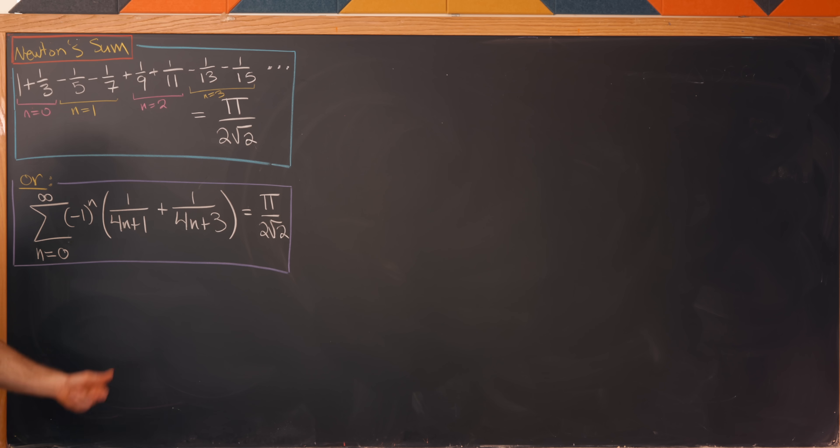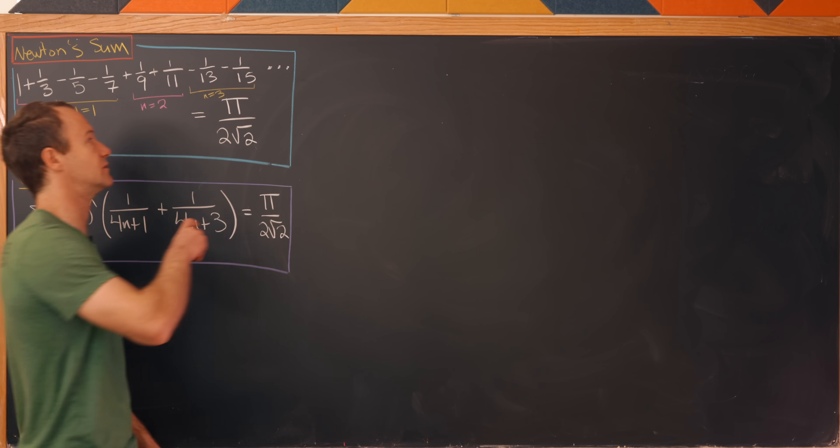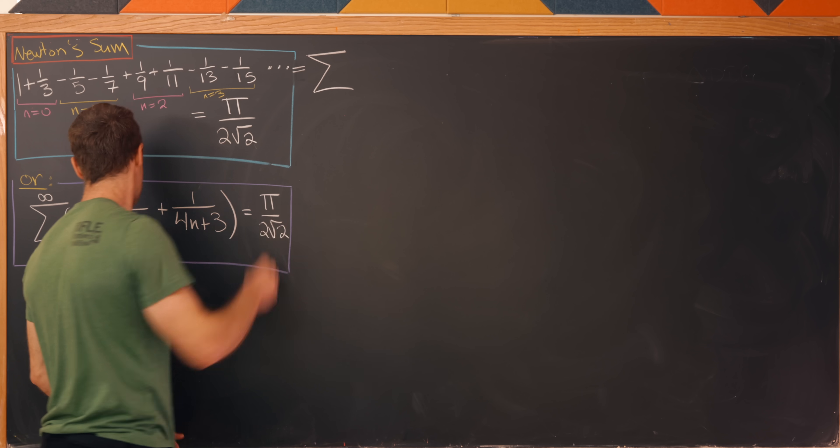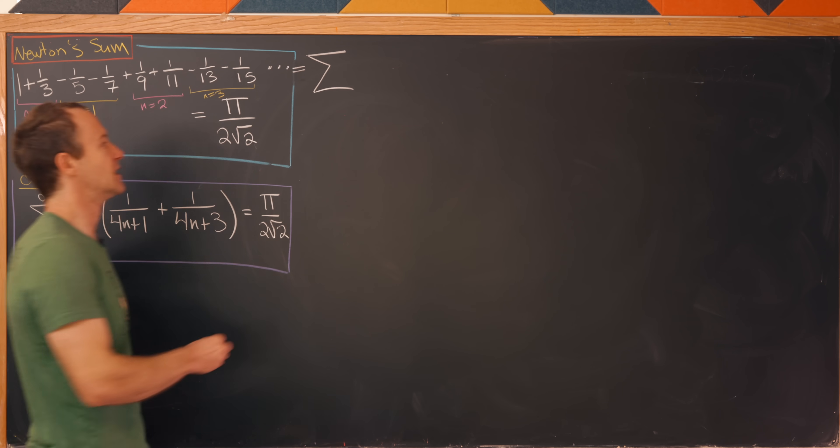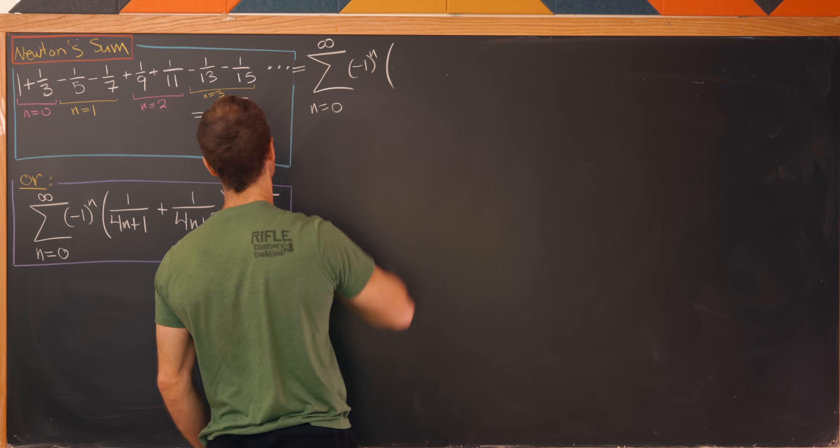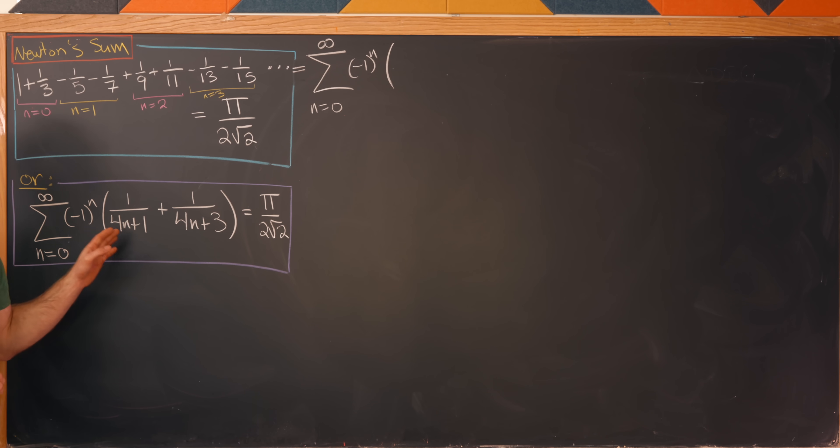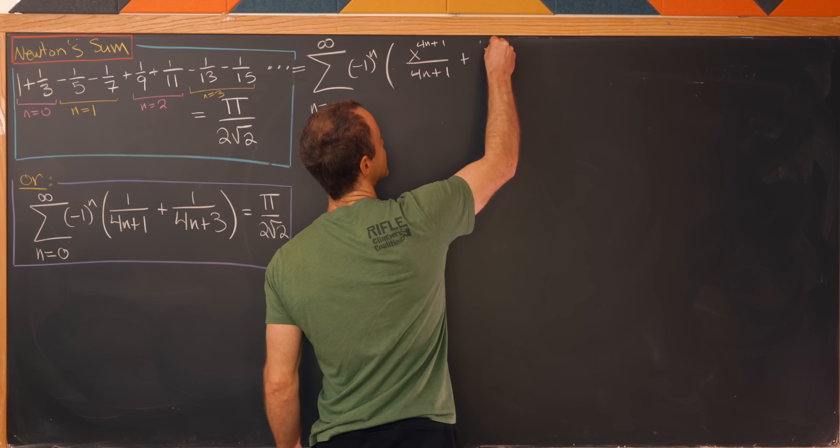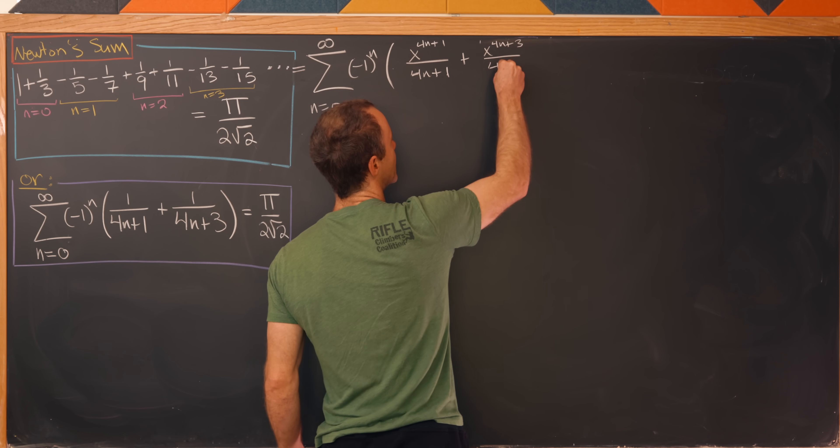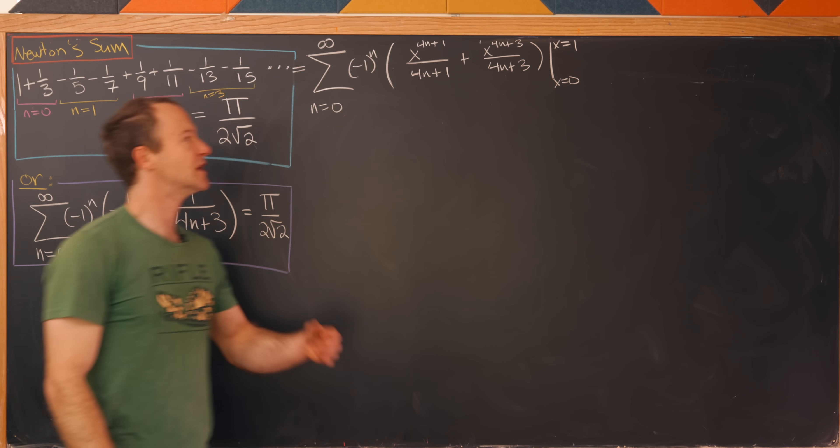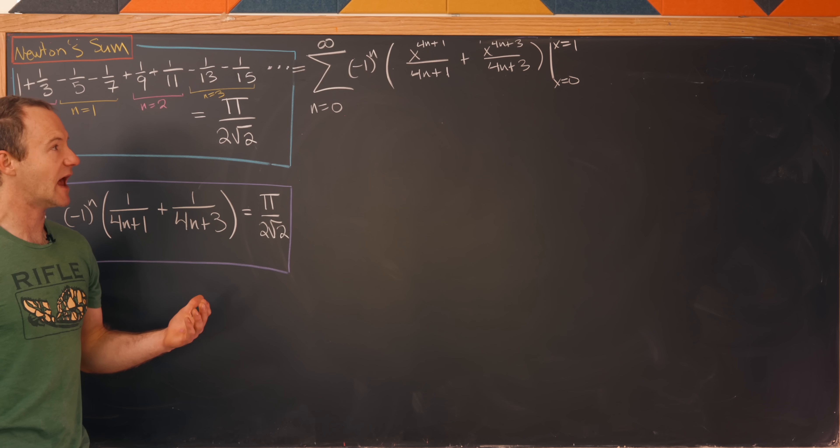Now let's get to showing that this is in fact equal to π/(2√2). Let's do this by opening this bit up and writing it in summation notation form. Here we have the sum from n equals 0 to infinity of (-1)^n times, and I'm going to write this as x^(4n+1)/(4n+1) plus x^(4n+3)/(4n+3), where I've evaluated this at x equals 0 and at x equals 1. In other words, I'm viewing this as a 0th integral, just the evaluation of a function at endpoints.